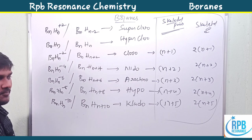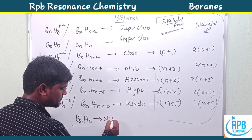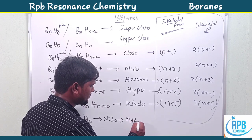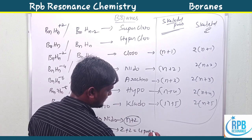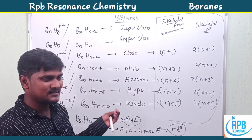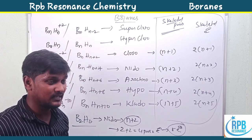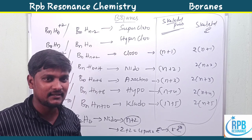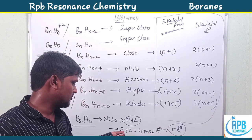For example, B2H6 is nido type, so the skeletal electron pair formula is n+2. Here n=2 (number of boron atoms), so 2+2 = 4 pairs of electrons, which equals 8 skeletal electrons. Questions about the number of skeletal electrons appear in CSIR, GATE, and local SET examinations.